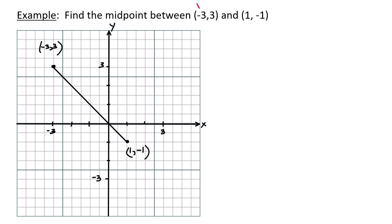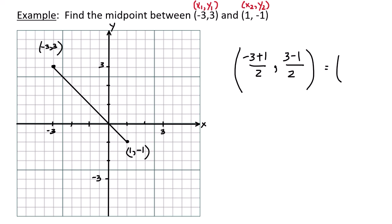I'll label my points: x1, y1 for the first point and x2, y2 for the second. The midpoint is: x-coordinate = (−3 + 1) / 2 = −2 / 2 = −1, and y-coordinate = (3 + (−1)) / 2 = 2 / 2 = 1. So the midpoint is (−1, 1), the point exactly halfway between (−3, 3) and (1, −1).